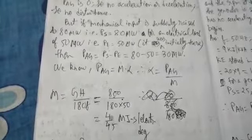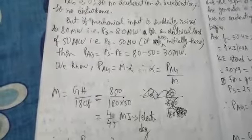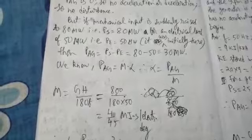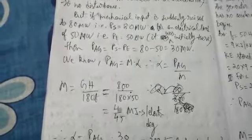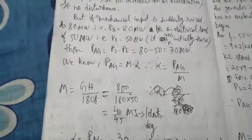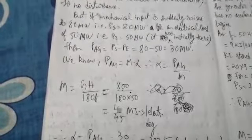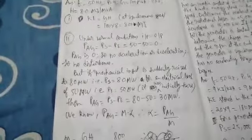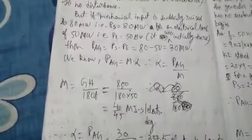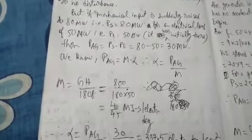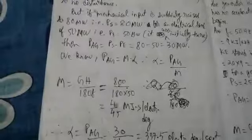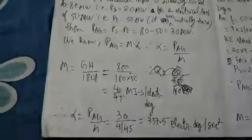After that, you can take your conventional equations of stability: PAg equals M times alpha, where M is your angular momentum and alpha is your angular acceleration. From there, alpha equals PAg by M. Now M equals GH divided by 180f. So GH is 800, divided by 180, and frequency is 50. It comes out to be 4 by 45 megajoule-second per electrical degree.